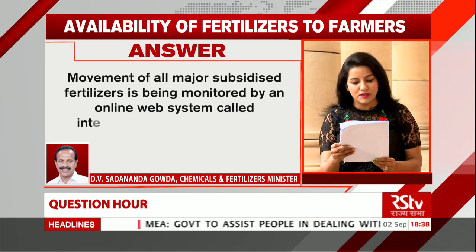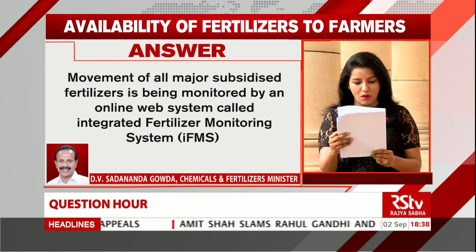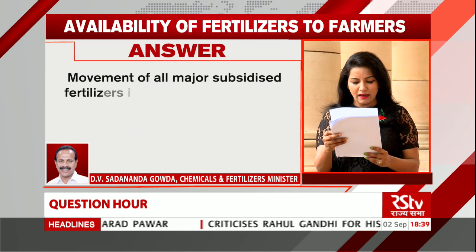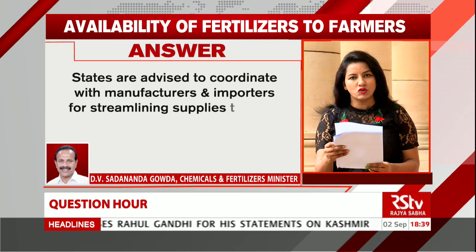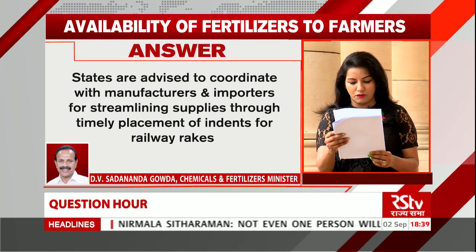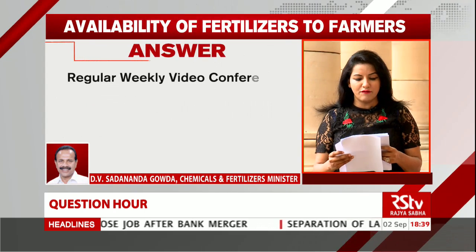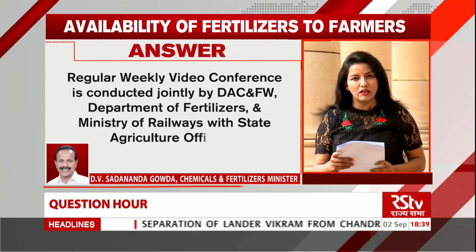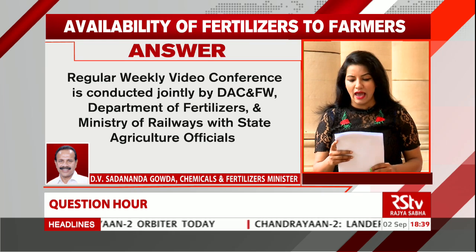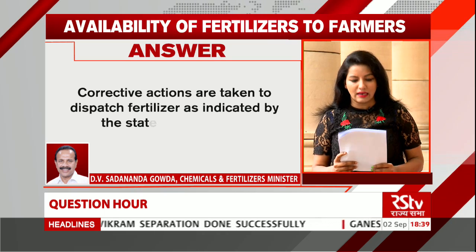The movement of all major subsidized fertilizers is monitored throughout the country by an online web-based monitoring system called the Integrated Fertilizer Monitoring System, IFMS. State governments are regularly advised to coordinate with manufacturers and importers for streamlining supplies. Regular weekly video conferences are conducted jointly by the Department of Agriculture and Cooperation and Farmers Welfare, Department of Fertilizers, and Ministry of Railways with state agriculture officials, and corrective actions are taken as indicated.